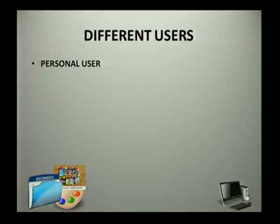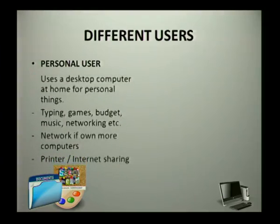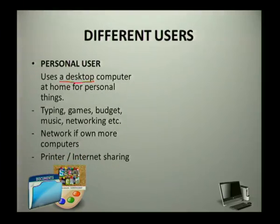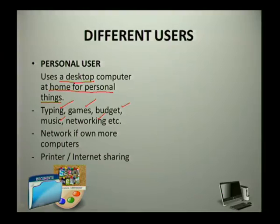The first type of user is a personal user. A personal user uses a desktop computer and would typically be at home doing personal things. What does this user do? They can be typing, playing games, doing their budget, playing music, as well as networking. You can also have a network at your house if you have more than one computer, and you can have a printer as well as share the internet. A personal user would be someone like you, sitting at home with your own computer using it for your own things.